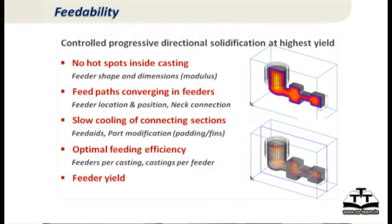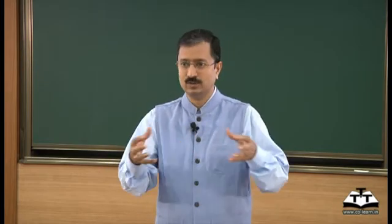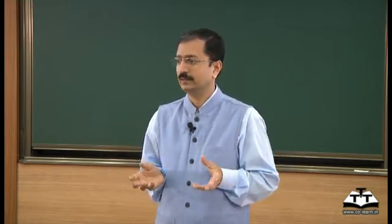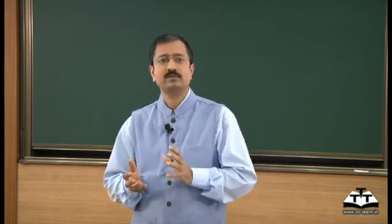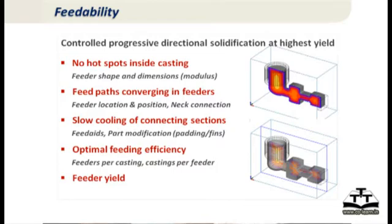For the other two rules — efficiency and yield — we can control those by connecting the same number of feeders per casting and number of castings per feeder. You can have one feeder connected to multiple castings, but also one casting may need multiple feeders. Minimizing that number of feeders gives us the best feeding efficiency and yield combination. I will also show some examples to illustrate these points.